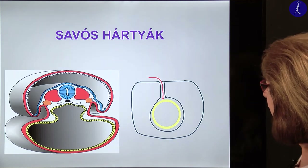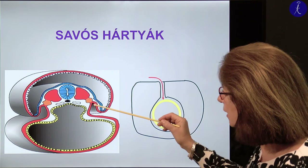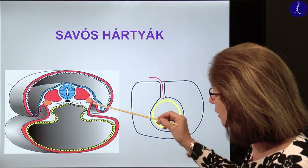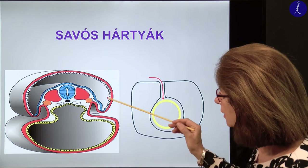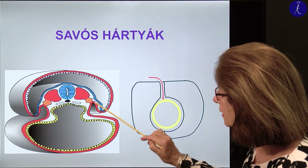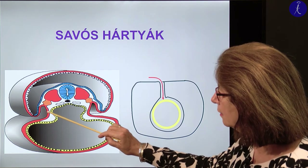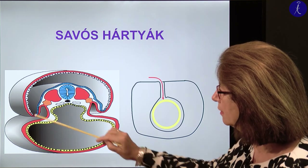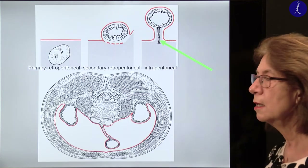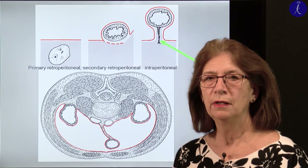The serous membranes themselves originate from the lining of the intraembryonic coelom. On this picture the inner black line along the gray territory is the visceral peritoneum and that is the parietal peritoneum. Regarding the peritoneum in the abdominal region, we have several possibilities. There are organs which have nothing to do with the peritoneum — the so-called primary retroperitoneal organs.